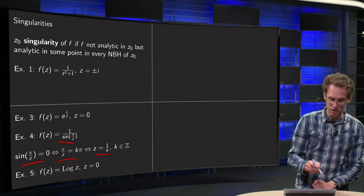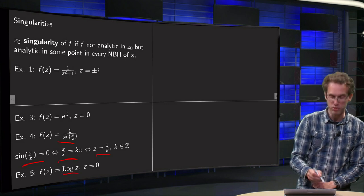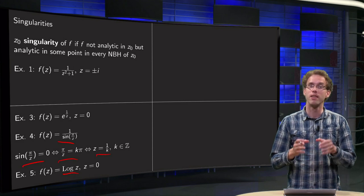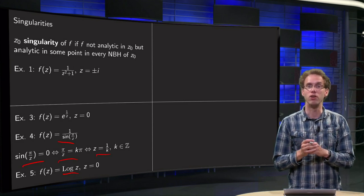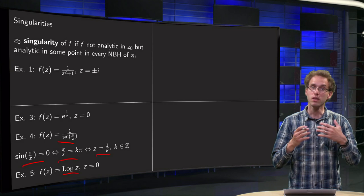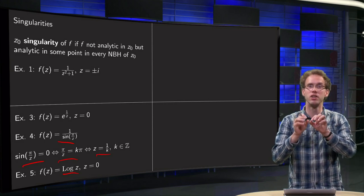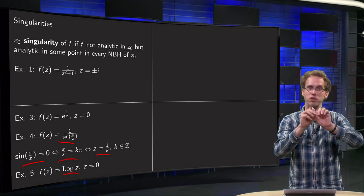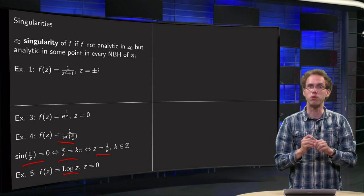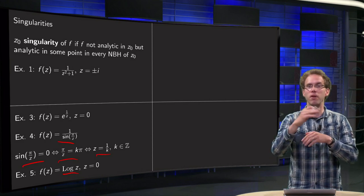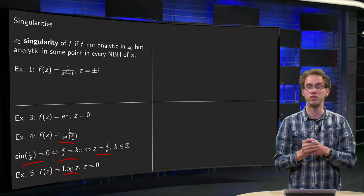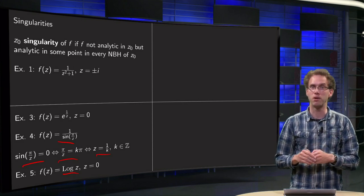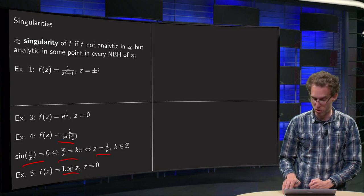And finally we take a look at the last example, the log of z, not even defined z equals 0, it is a branch point, so this is a singular point, because, well, okay, you still have to make the branch cut, so z equals 0 is a singularity, infinity is another branch point, you have to glue them together by some curve, but still, you have plenty of other points in the neighborhood of z equals 0, where you can come, and where your function is analytic, so z equals 0 is also a singularity of the log of z.